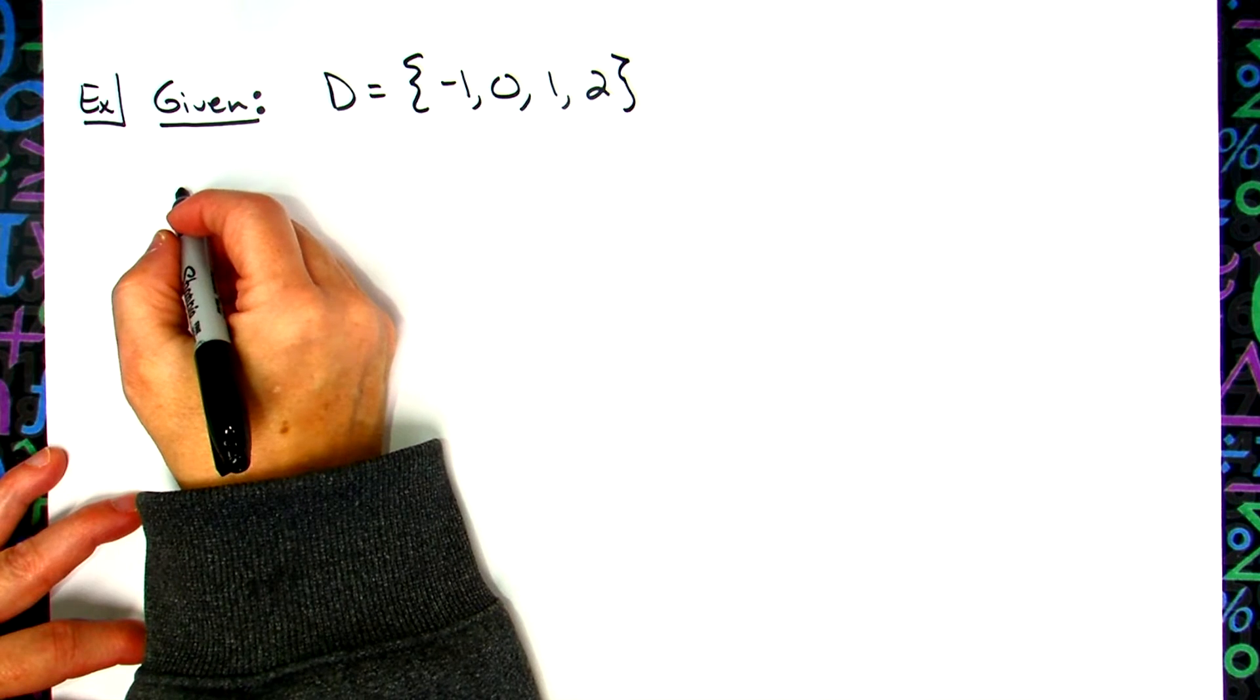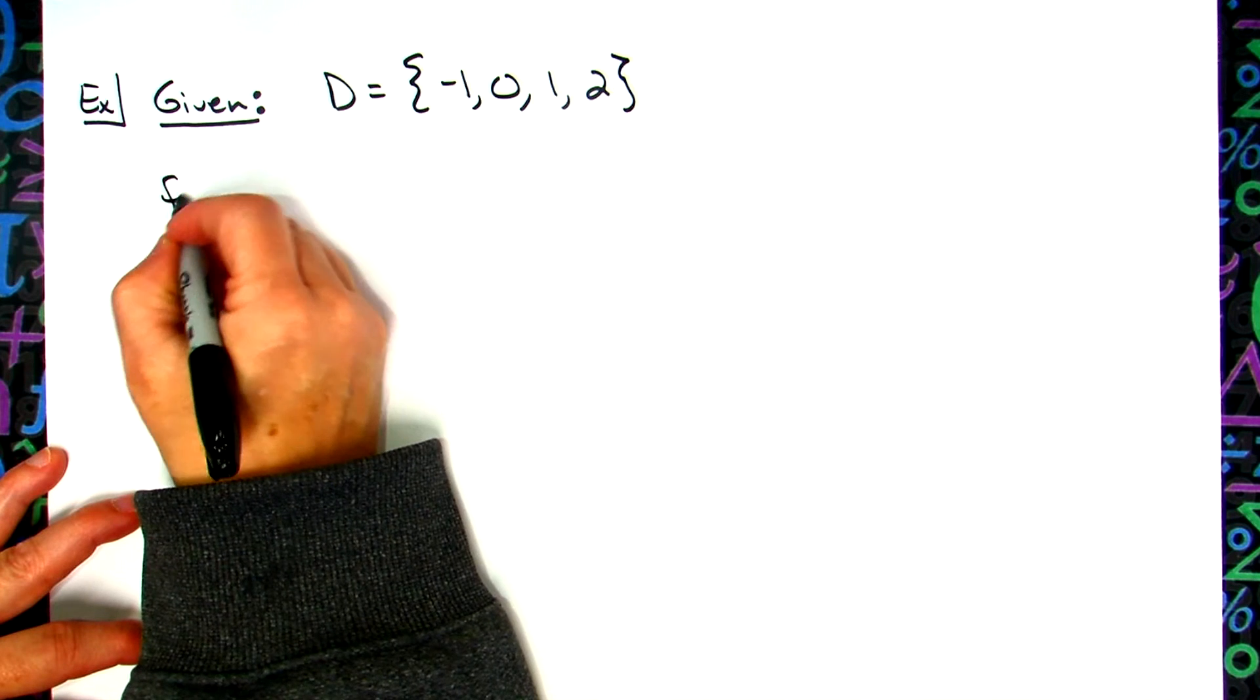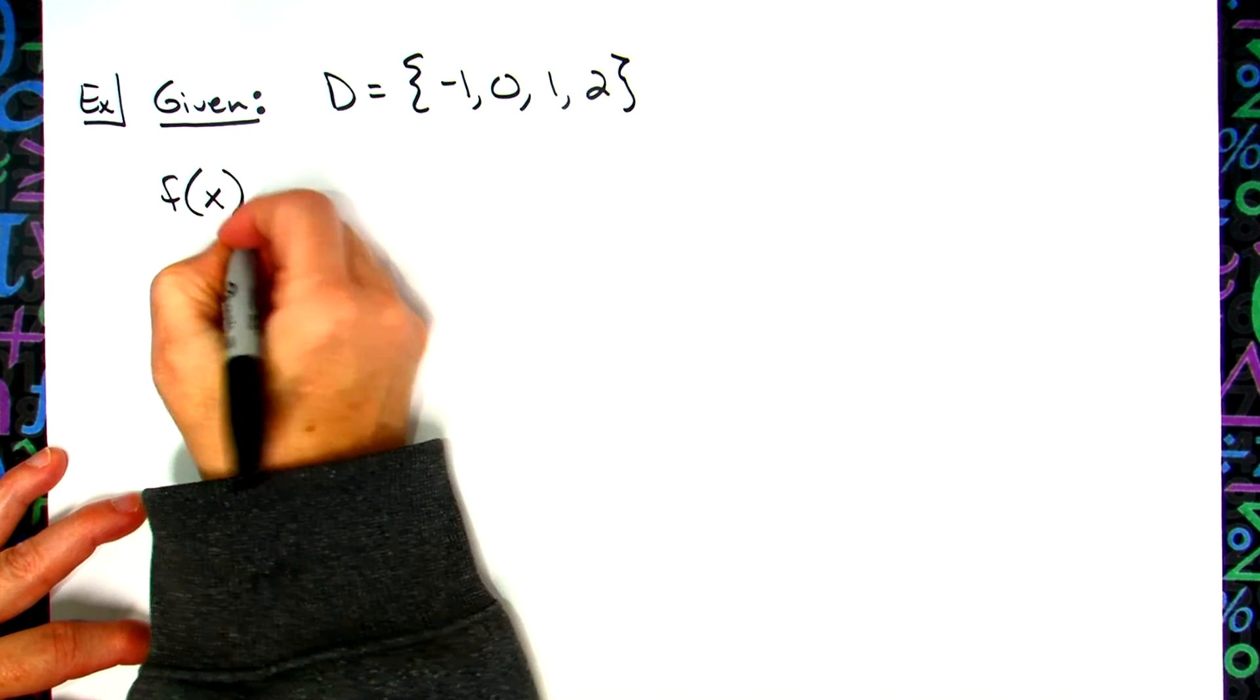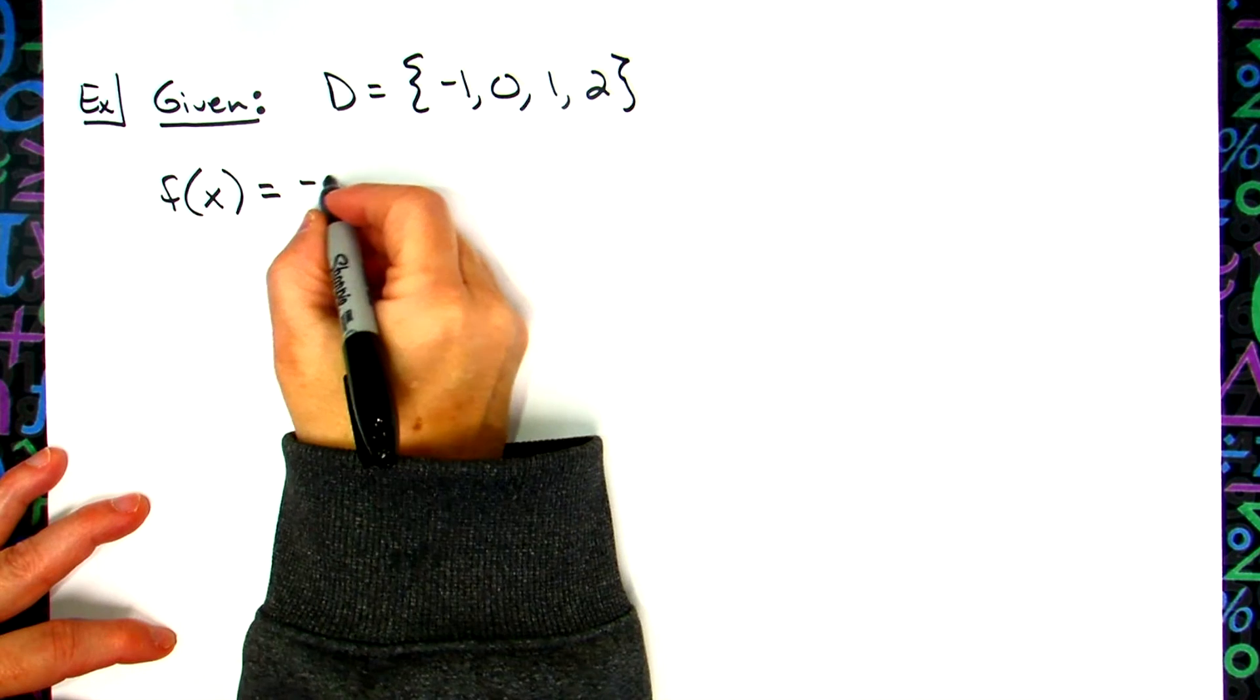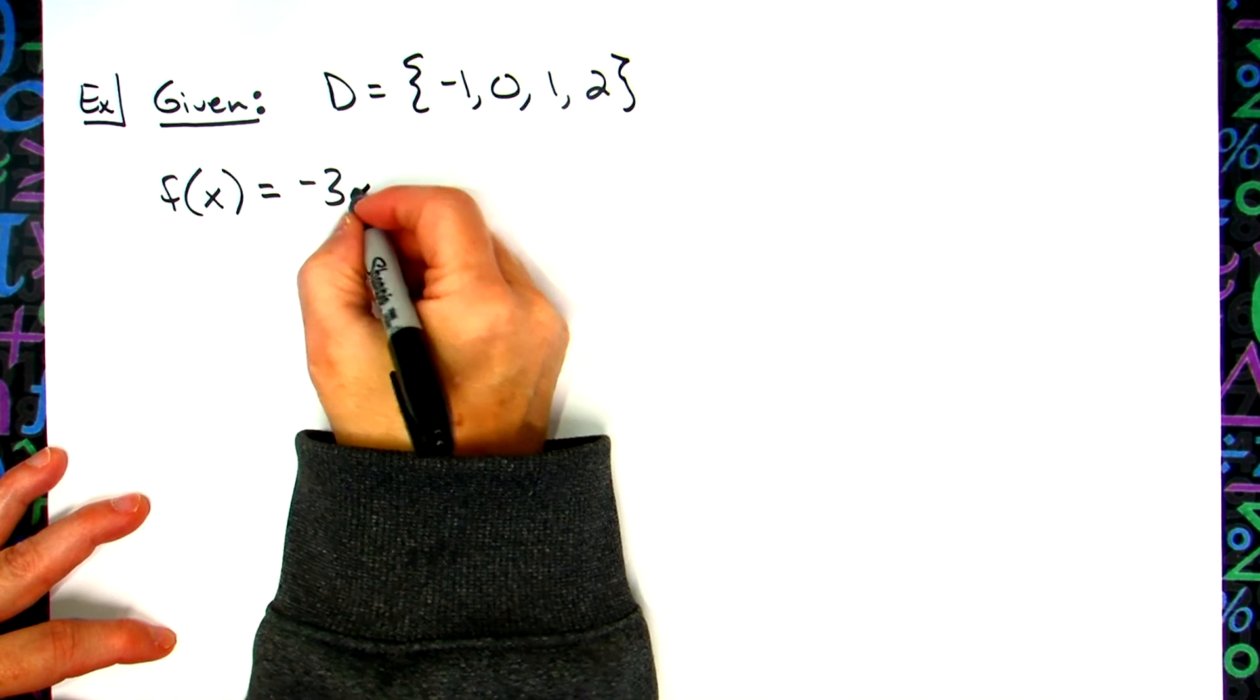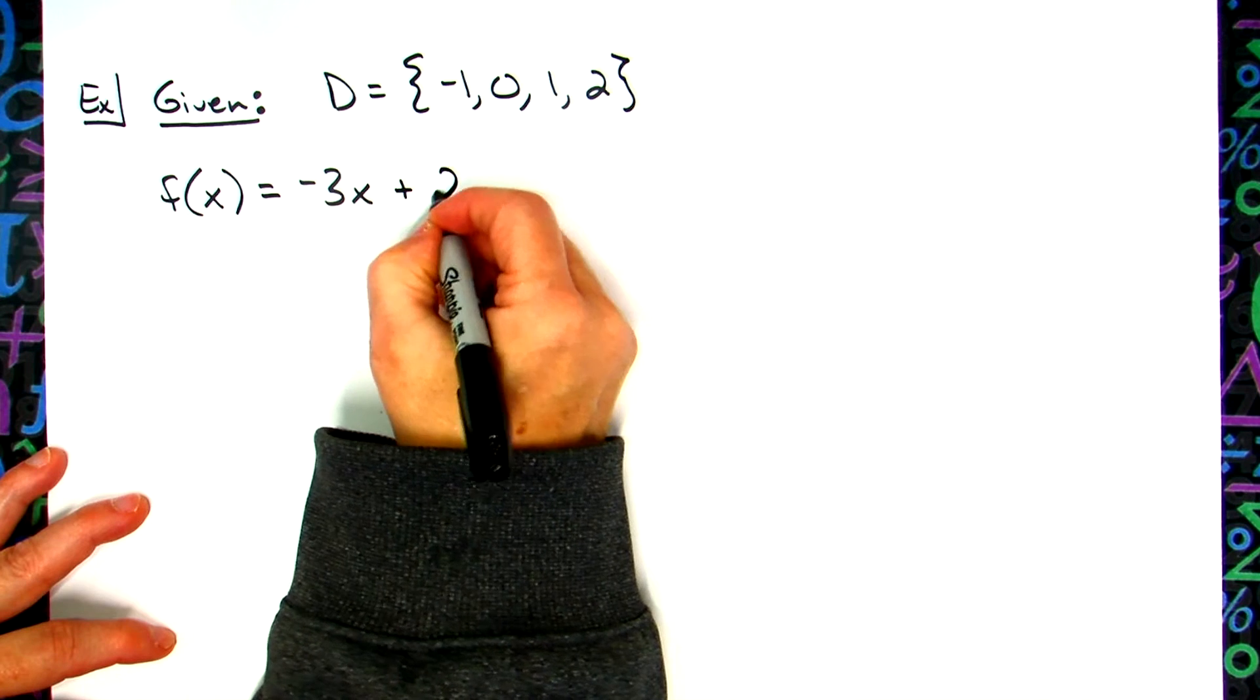And then let's say they give you your function f(x) equals, I don't know, let's make it -3x + 2.